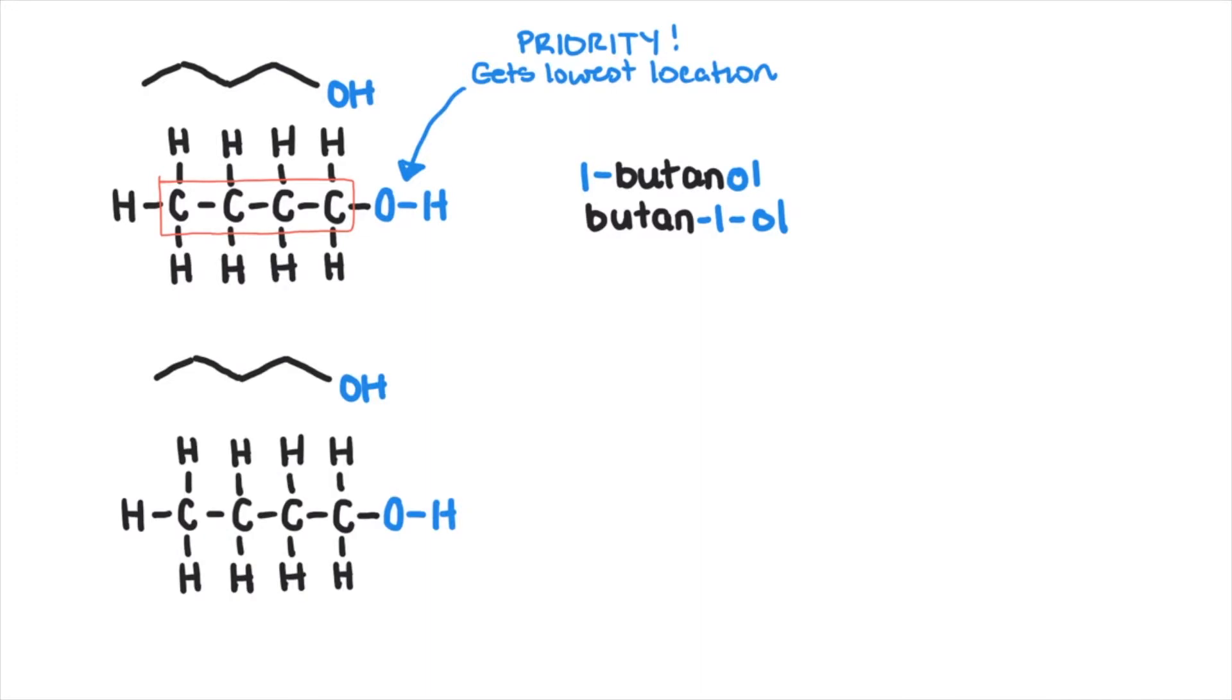If we take the same alcohol and replace another hydrogen with a hydroxyl, that position must also be named. So this is 1,3-butanediol or butane-1,3-diol. The di tells us there's two hydroxyls.